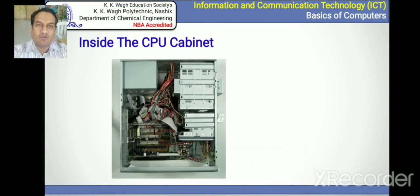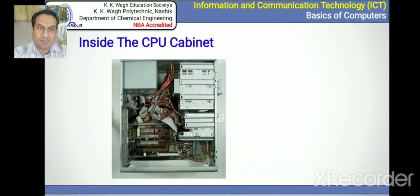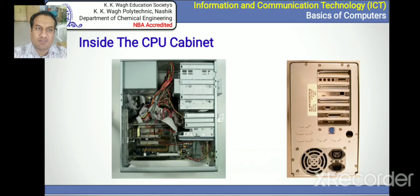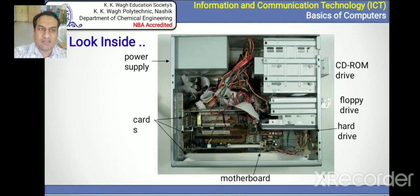The CPU — what exactly is it? The CPU is the brain of the computer. If you observe the components inside the CPU, you can understand the components of the computer system. Looking inside the CPU, there are different compartments: power supply, card arrangement, motherboard, hard drive, floppy drive, CD-ROM drive, etc. These are the major elements inside the CPU.